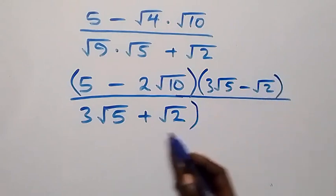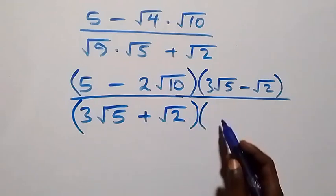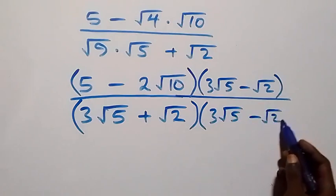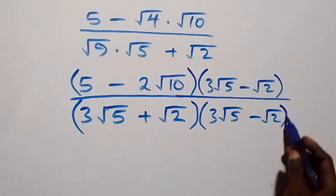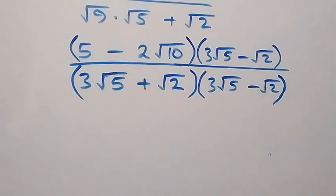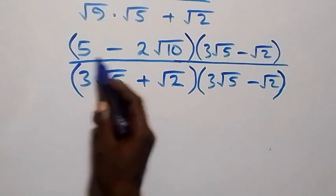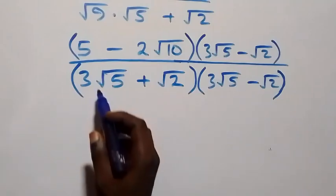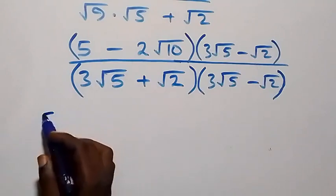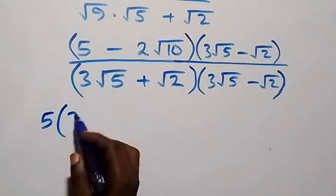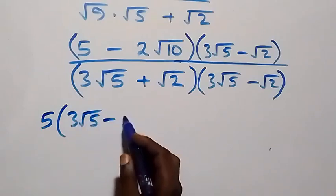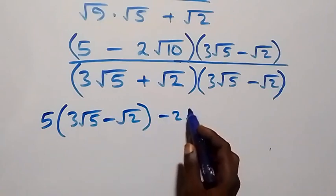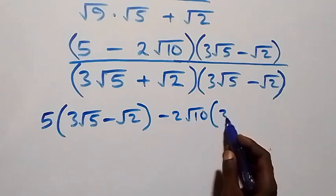Next we simplify further — these two brackets multiply each other. Opening the bracket, we have five multiplied by three root five minus root two, then we have minus two root ten also multiplied by three root five minus root two.